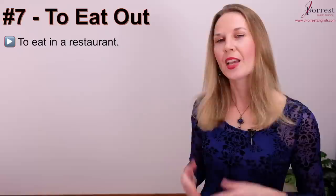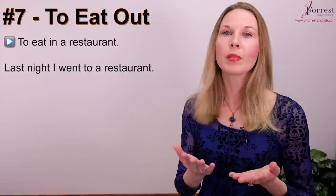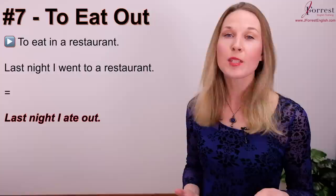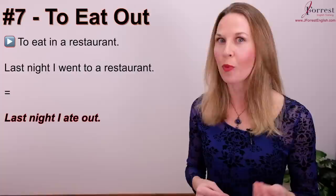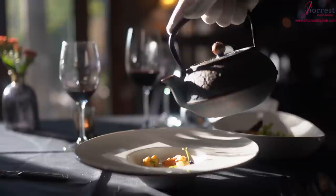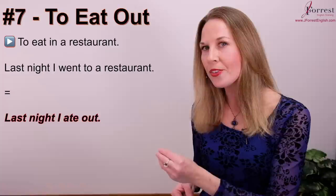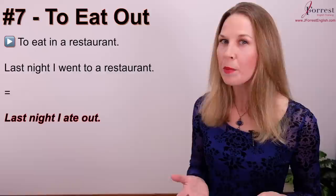Number seven: to eat out. This simply means to eat in a restaurant. Rather than saying 'I went to a restaurant for dinner', just say 'I ate out'. You can use it for any meal: this morning I ate out before work. You might suggest to a friend: if you want to save money, you should stop eating out all the time — stop eating in restaurants, because it's more expensive.